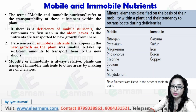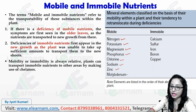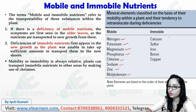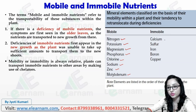When we talk about mobile nutrients, those are nitrogen, potassium, magnesium, phosphorus, chlorine, sodium, zinc and molybdenum. Immobile nutrients, which can't move from one area, include calcium, sulfur, iron, boron and copper.